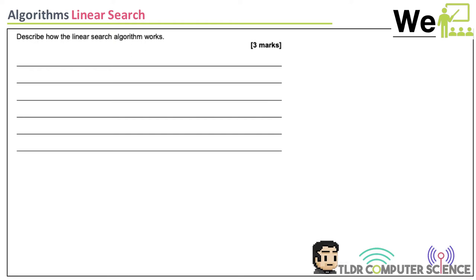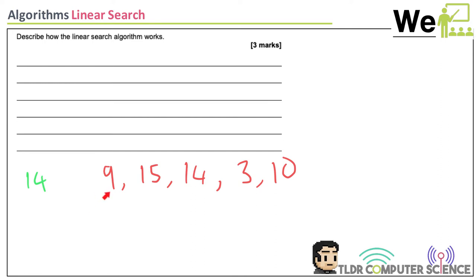In a linear search, imagine items like 9, 15, 14, 3, and 10, and we're searching for 14. You go to the first item in the list and compare it to your search term. If they're not the same, you move on to the next item.